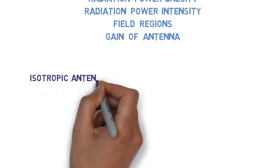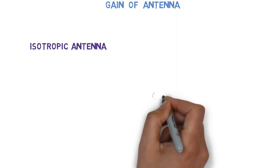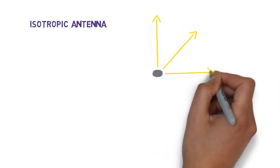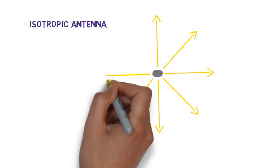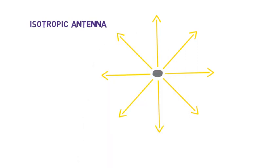So what is an isotropic antenna? If an antenna radiates electromagnetic waves in all directions uniformly and its field is independent of the values of theta and phi, then this is called an isotropic antenna.